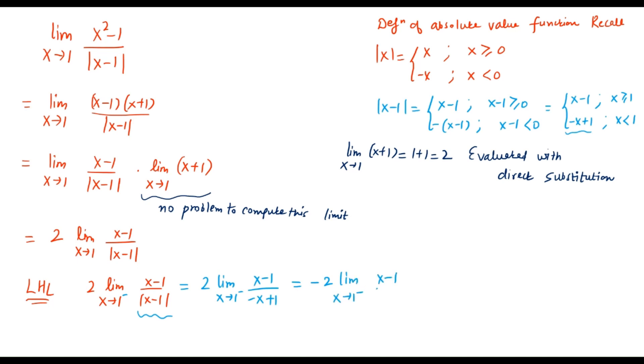And if you further simplify this, I will find this is negative 2 times limit x goes to 1 from the left, (x minus 1) over (x minus 1), which simply gives me minus 2. So that's the simplification for left hand limit.